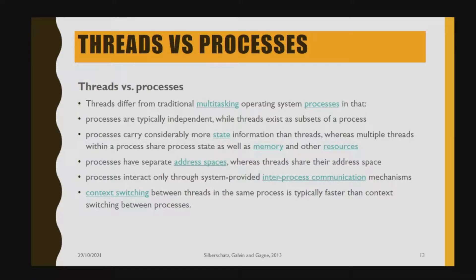Threads differ from traditional multitasking operating system processes. Processes are typically independent, while a thread exists as a subset within a process — the process is the bigger, more independent entity. A process carries considerably more state information than a thread, whereas multiple threads within a process share the process state, memory, and other resources. Processes have separate address spaces, while threads share their address space with the process.